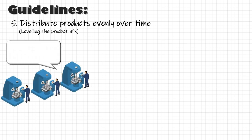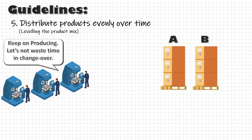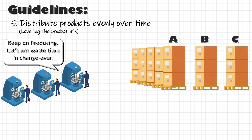Most organizations find it easier to manufacture long runs of one product type and avoid changeovers, but this can create many problems for the rest of the value stream. For example, if I have three products A, B, and C, where A is the highest selling product, it may seem to make sense to keep producing A and take a changeover only when the stock of B or C is about to finish.